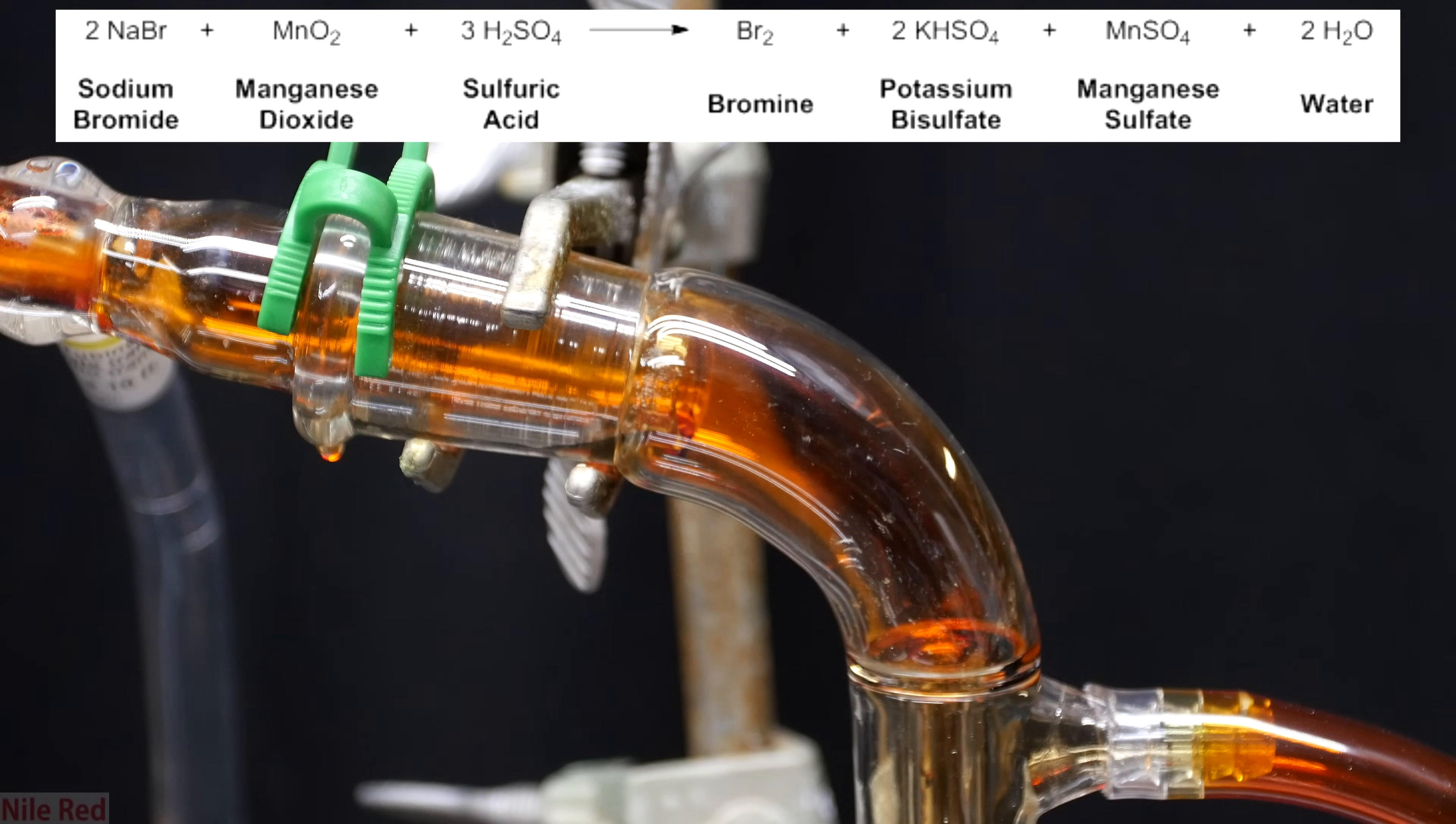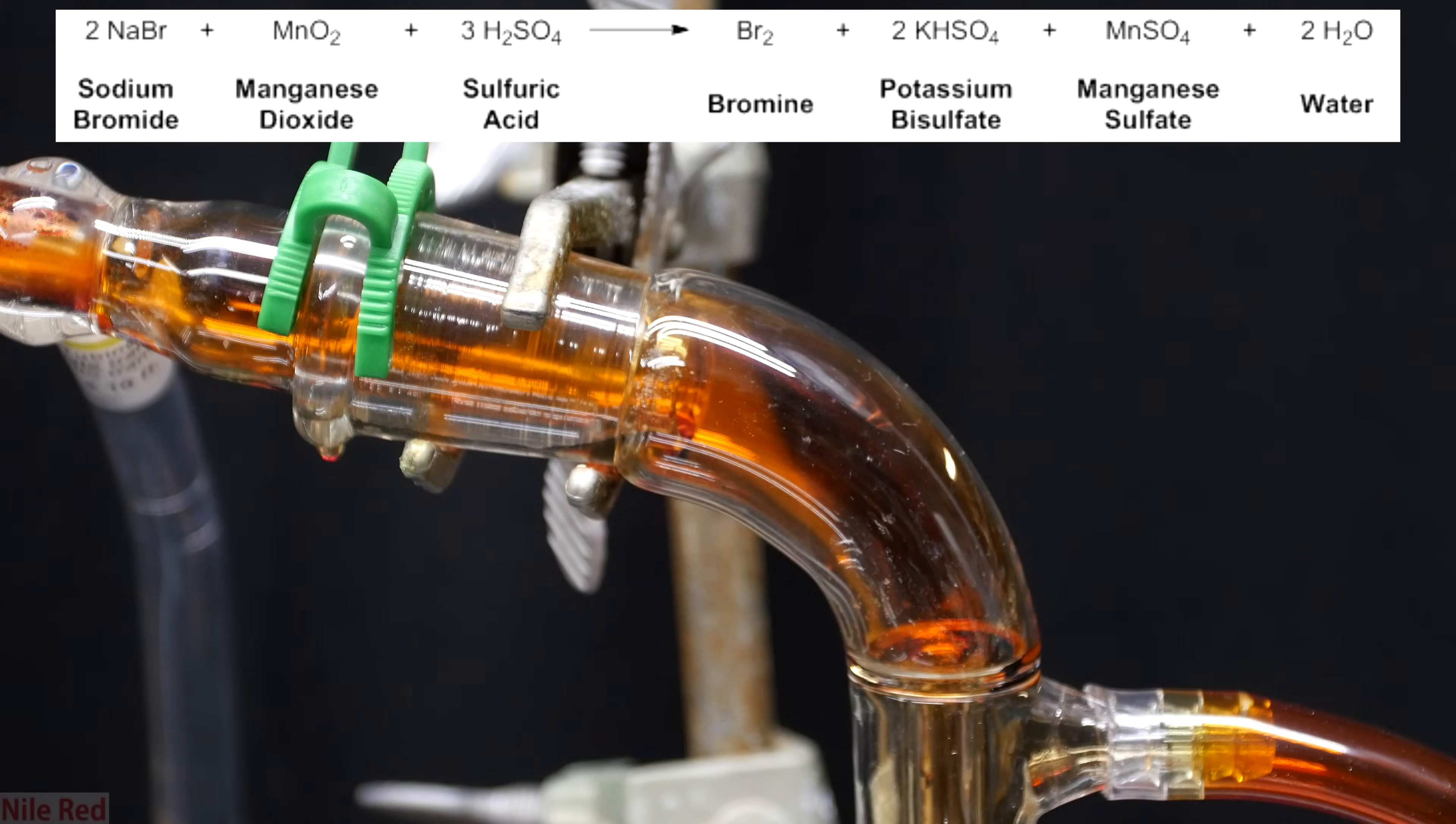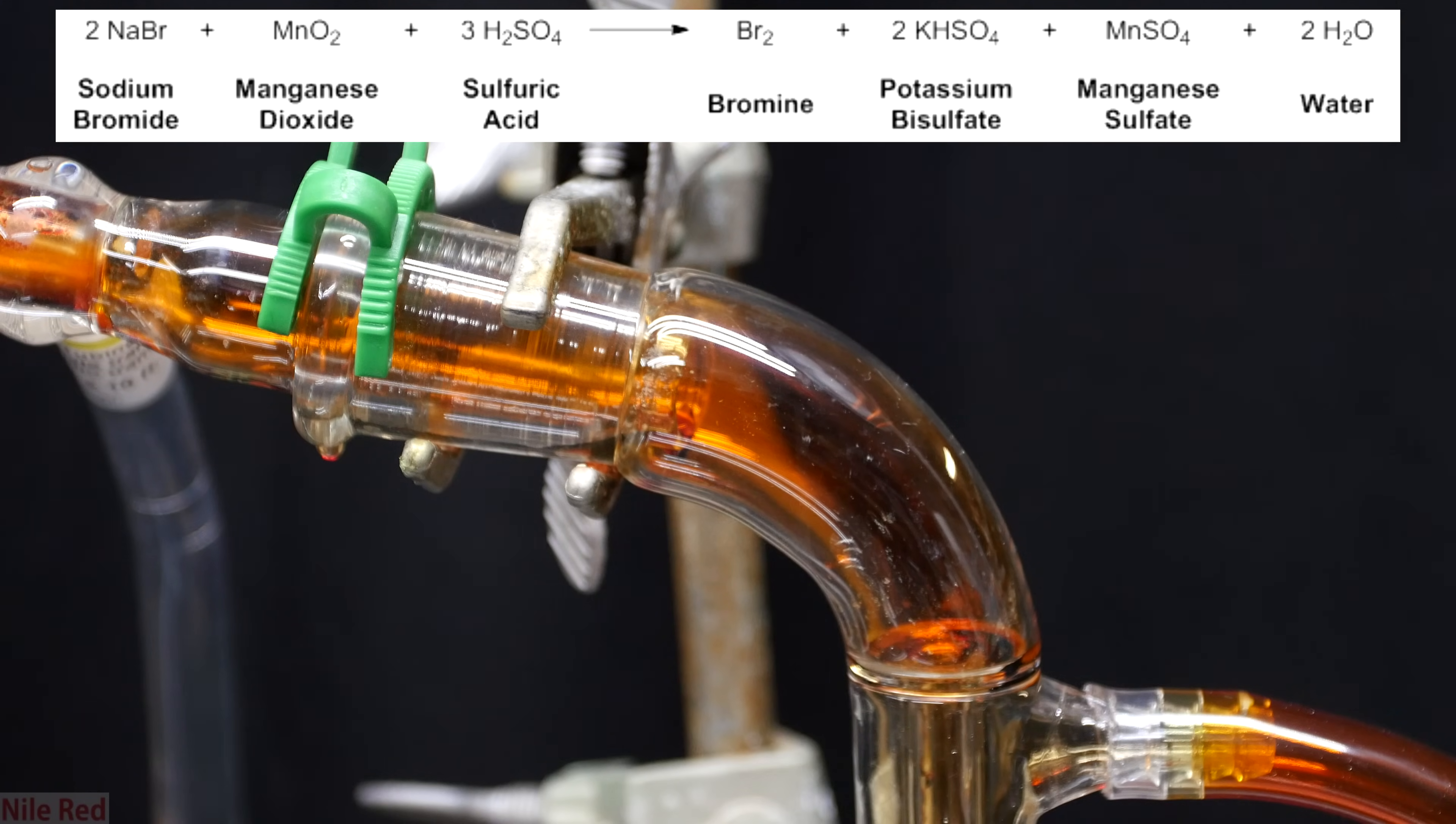The manganese dioxide is acting as the oxidizing agent, and it's oxidizing the bromine anion in sodium bromide to elemental bromine. Because it's just acting as an oxidizing agent, it can be replaced with other oxidizers. Some examples of other oxidizers are things like potassium permanganate or hydrogen peroxide.